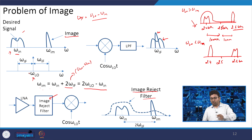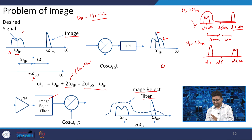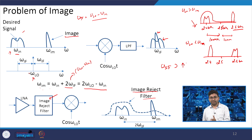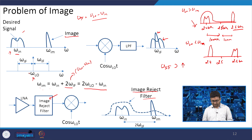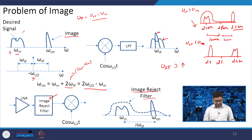If omega_IF is higher, you can more easily reject the image using a filter. Generally, a higher omega_IF is preferred to reject the image. However, there is a problem with channel selection when doing so, which we will see in the next slide.